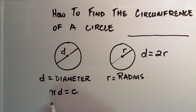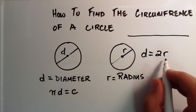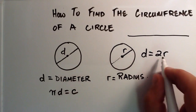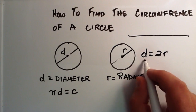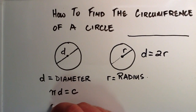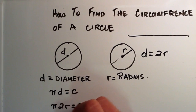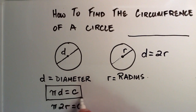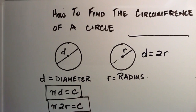We're basically going to rewrite this in terms of radius now. We simply replace the d with 2r, since 2r equals d. So another way to write this is pi times 2r equals the circumference, the distance around the circle. So we now have two different formulas we can use to find the circumference or the distance around the circle.